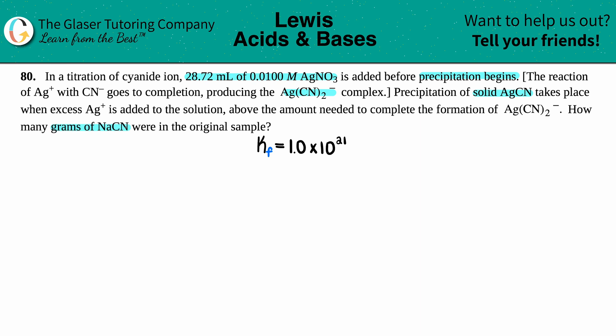For this question, I went to the back of the textbook to find out what the KF value is for this complex ion, the AgCN2 minus. And it turns out that the KF value is a really, really, really big number. Now remember, when we have K values that are really, really, really big, that means that at equilibrium, you're going to have basically mostly products, right? And they did tell us that the reaction of Ag plus and CN minus goes to completion and we're producing that complex ion.